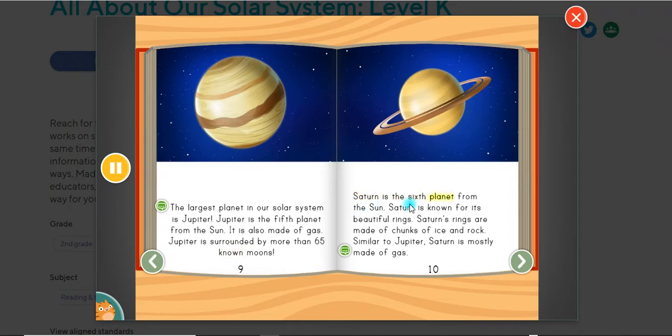Saturn is the sixth planet from the Sun. Saturn is known for its beautiful rings. Saturn's rings are made of chunks of ice and rock. Similar to Jupiter, Saturn is mostly made of gas.